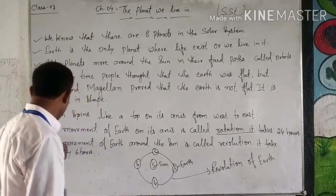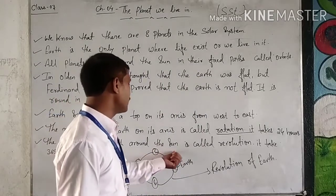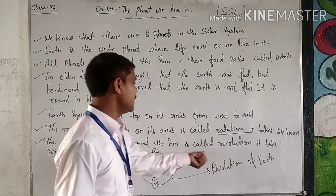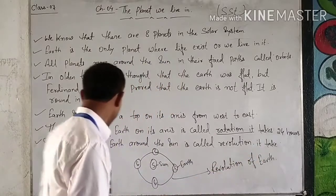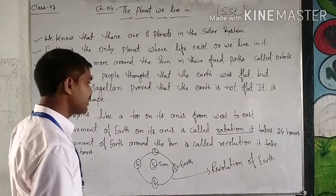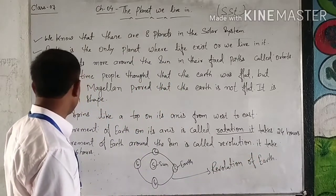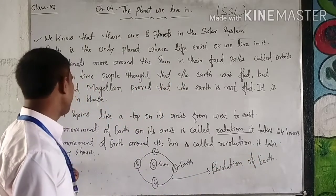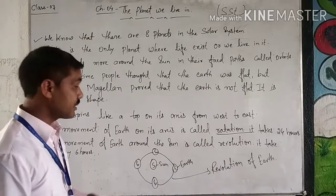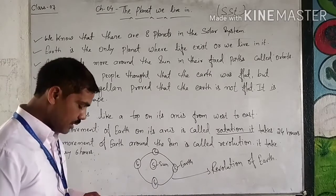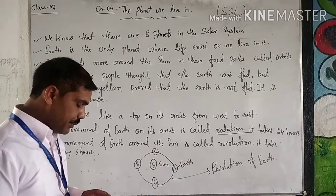The movement of Earth around the Sun is called revolution, and it takes 365 days and 6 hours to complete one revolution around the Sun.